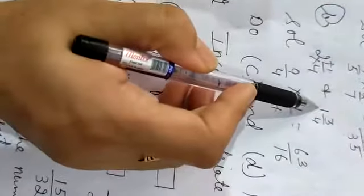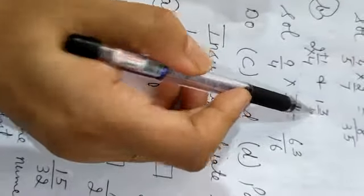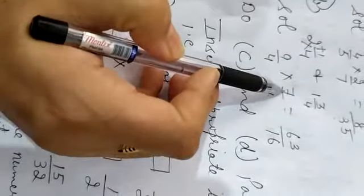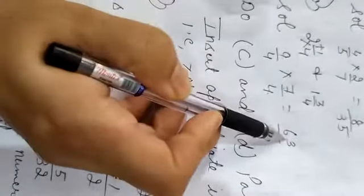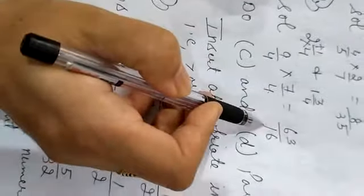9 upon 4. 4 into 1, 4 plus 3 equals 7. 7 upon 4. So 9 into 7 will be 63 and 4 into 4 will be 16.